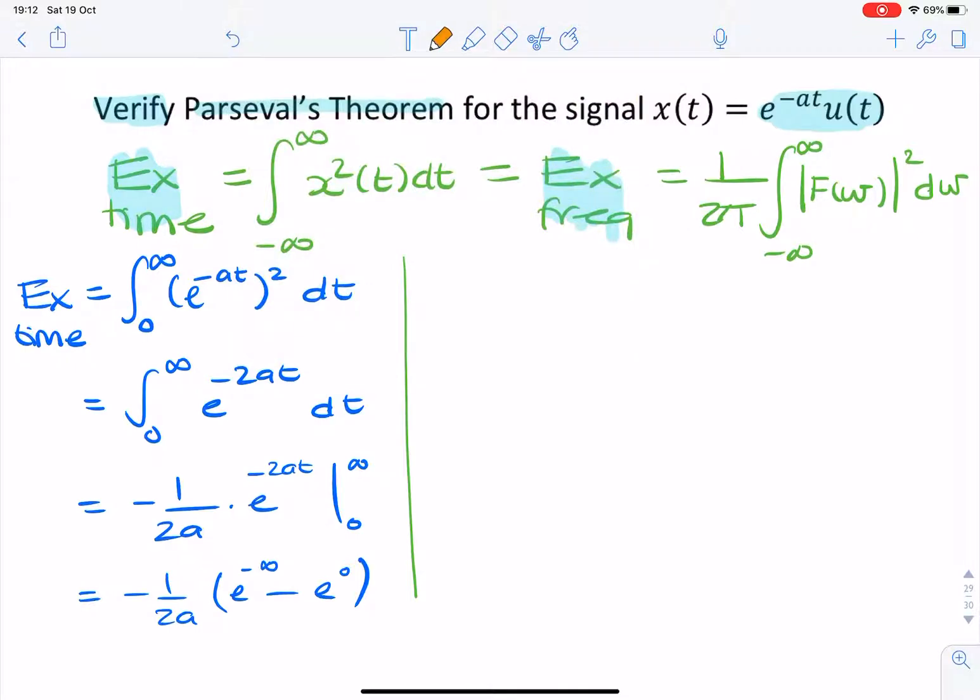So that is 1, and that is 0, so that then simplifies to 1 over 2a.